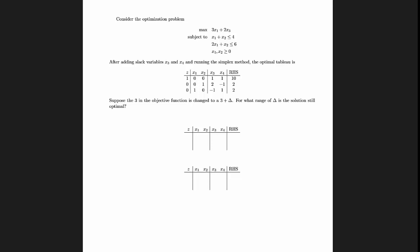Okay, so in this problem we're going to do some sensitivity analysis. We're given a linear optimization problem, and we're told that after running the simplex method, this is the optimal table. And the question is, if we change this 3 in the objective function to a 3 plus delta, then for what range of delta is the solution still optimal?